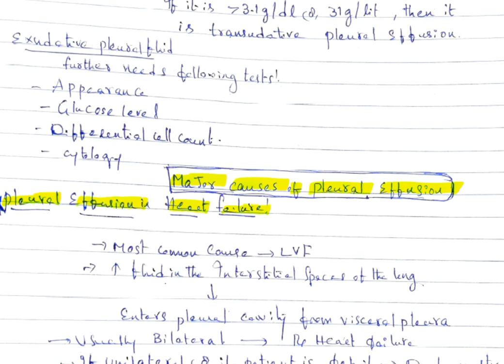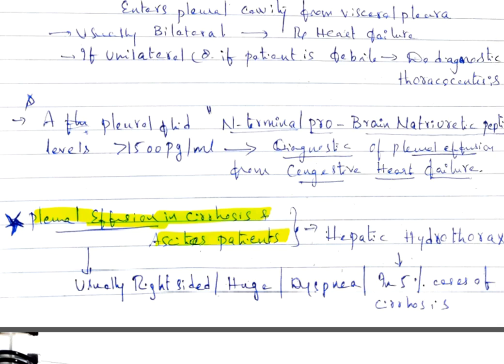Major cause of pleural effusion in heart failure is LVH. Increased fluid in the interstitial spaces of the lung enters the pleural cavity from the visceral pleura. This is the cause of pleural effusion in LVH or left ventricular failure. In LVH, it is usually bilateral. Treatment of pleural effusion is like treatment of heart failure itself.